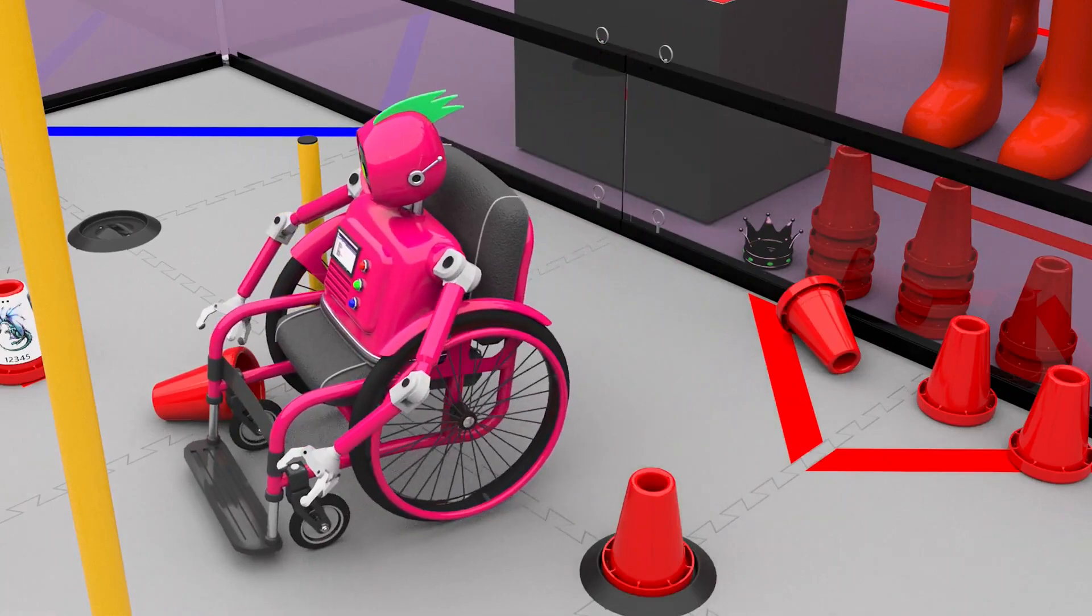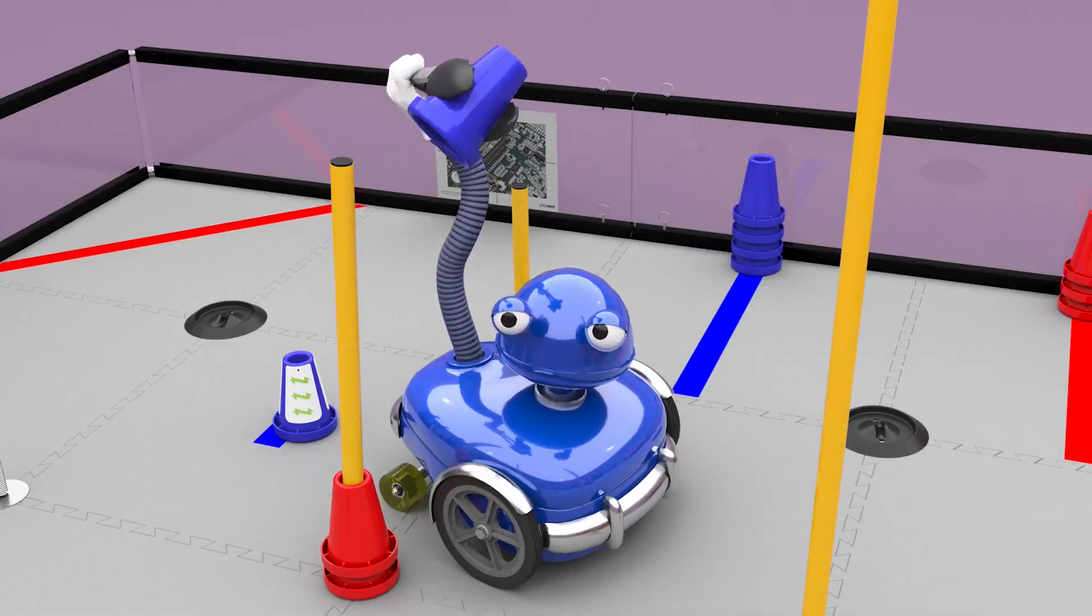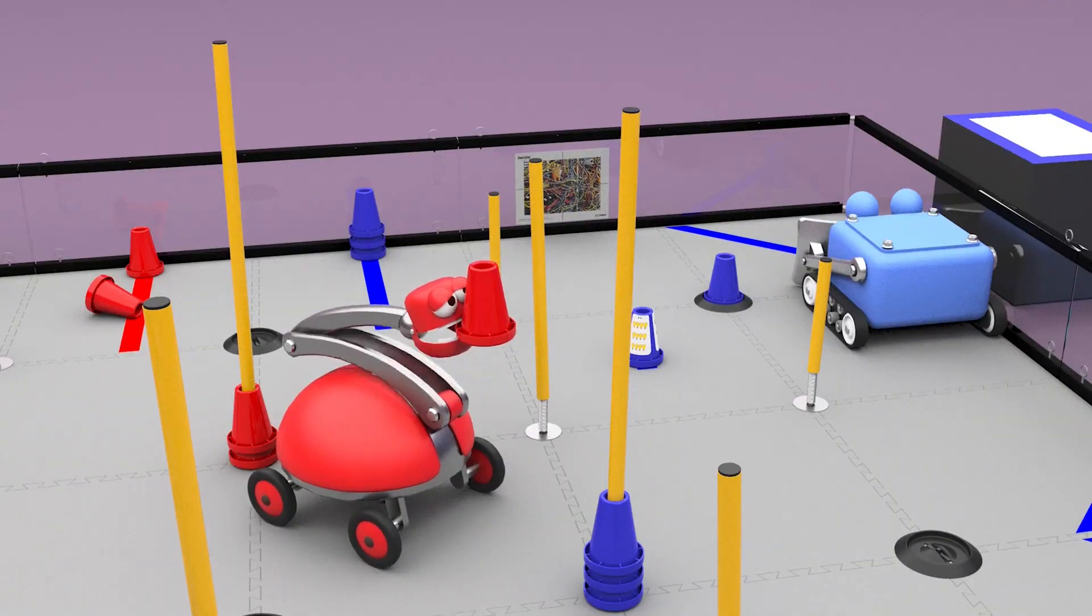Securing cones in junctions earns the same points as during the autonomous period. Two points for the ground junction, three points for the low, four points for medium, and five points for the high junction.